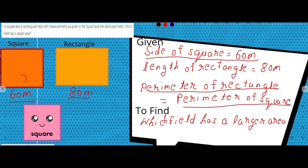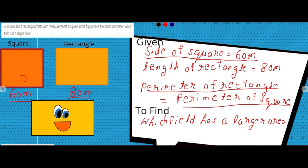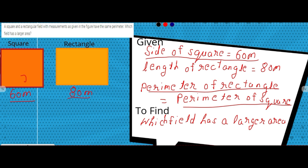We need to find which field has the larger area. First, let's recall: a square has all four sides equal, while in a rectangle the length and width are different. Always remember that the square has its four sides equal, while the rectangle has different length and width.